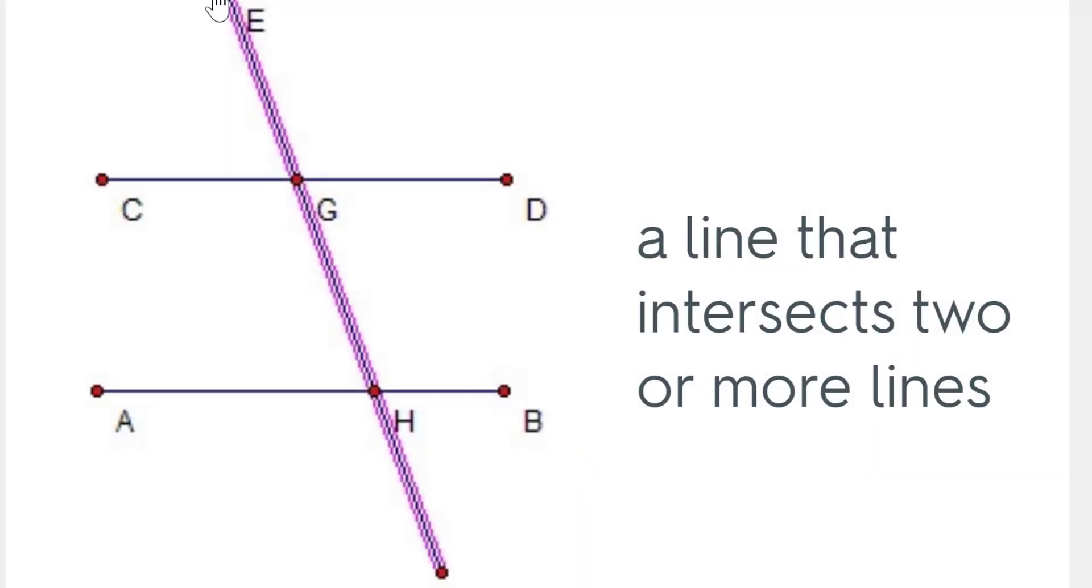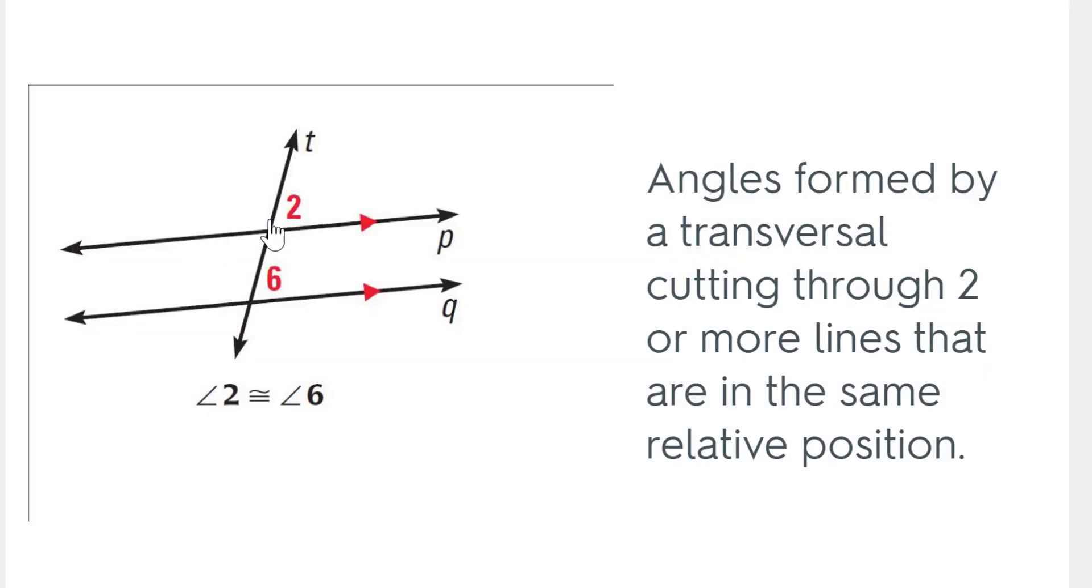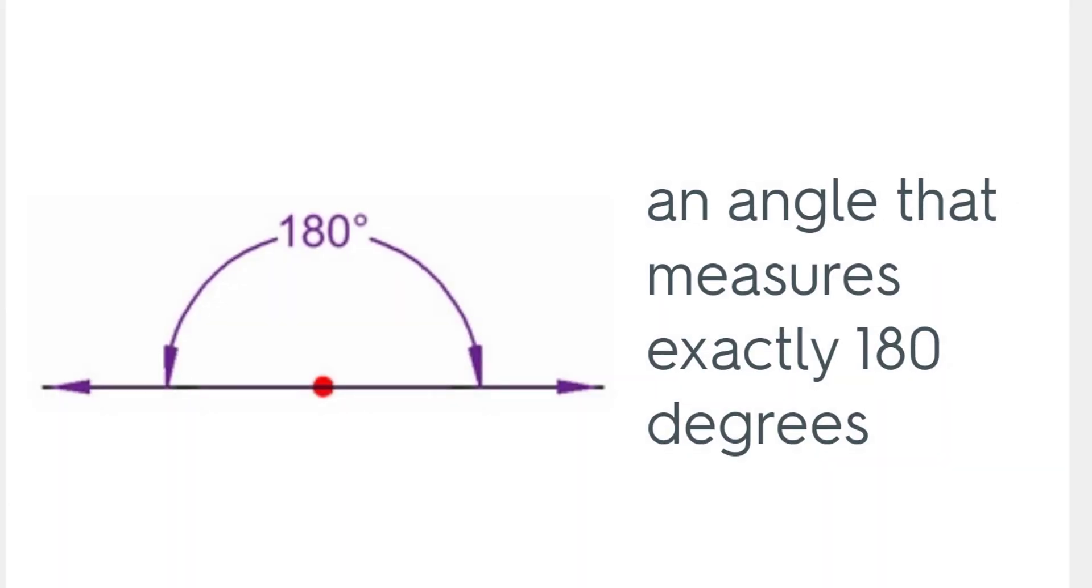Transversal. Transversal is the line that intersects two or more lines, or what I should say is parallel lines. Corresponding angles. This one's a big one. This is basically angles that are formed by a transversal cutting through two or more lines that are in the same relative position. We know that a circle is a figure that contains 360 degrees. I use circles all the time when I teach angles. Finally, we've got a straight angle. An angle that measures exactly 180 degrees.